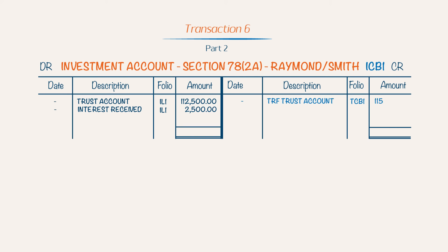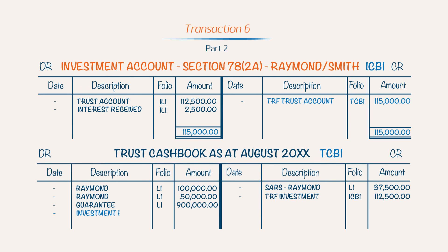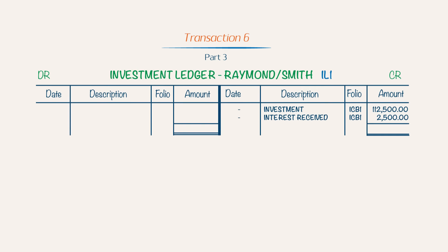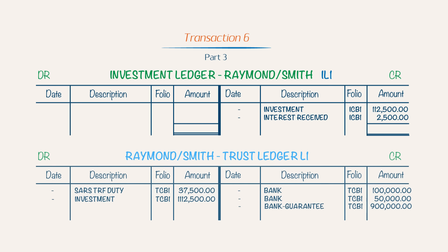Part 2: You credit the investment account with R115,000 to close it and bring the balance to zero, then debit the trust cash book with the funds received from the investment account. Part 3: You close the investment ledger of Raymond/Smith and transfer the balance to the trust ledger of Raymond/Smith. You debit the investment ledger to close it with R115,000 and credit the trust ledger to transfer the balance, recording the description, folio, and amount accordingly.